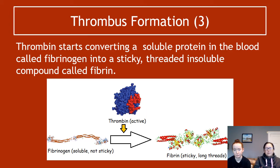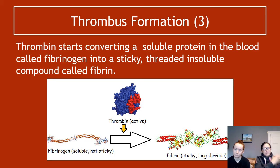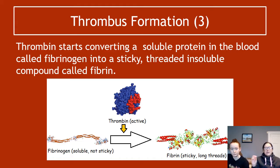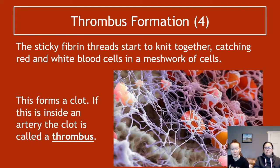Thrombin then converts a soluble protein already floating in our blood — fibrinogen — into a sticky, threaded, insoluble compound called fibrin. In its fibrinogen form it's completely soluble and flows through your blood. As soon as thrombin acts on it, fibrinogen changes structure so that it becomes insoluble and forms fibers not dissimilar to a spider's web in terms of stickiness and ability to mesh together.